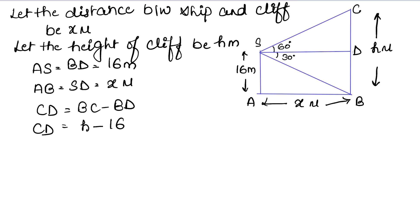We have the depression triangle and the elevation triangle. The depression angle is 30 degrees, so the alternate angle is also 30 degrees. We take triangle SAB, where we have the perpendicular SA equals 16 and base AB equals x.